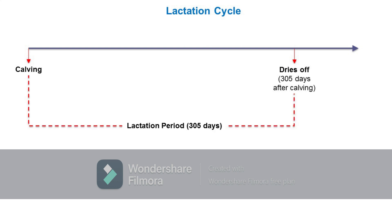Should a cow be desired to calve every year, the cow is then bred about 6 to 82 days after calving, depending on the body condition of the cow at the onset of postpartum estrus, or heat occurrence after calving.